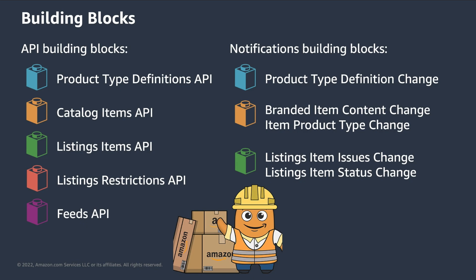You can freely pick and connect these pieces to create your end-to-end listing experience. There are five API building blocks: the Product Type Definitions, the Catalog Items, the Listing Items, the Listing Restrictions, and the FITS APIs. There are also five notification building blocks: one related to new and existing product types, two related to changes to relevant ASINs, and two related to Selling Partners' listings.